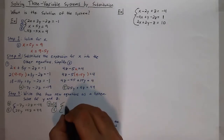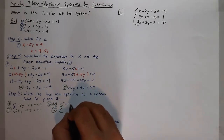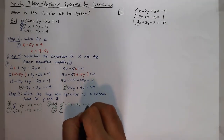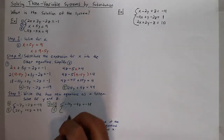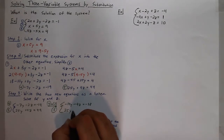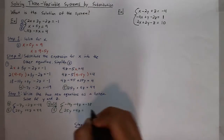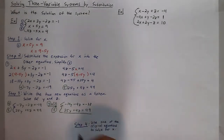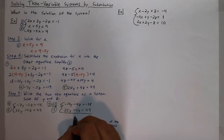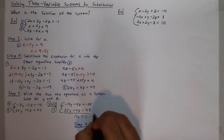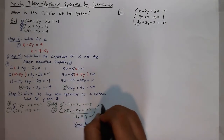I'll get negative 14y minus 4z equals negative 38, and equation 5 will just be 25y plus 4z equals 49. Adding these together, I'll get 11y equals 11, which tells me that y must equal 1.